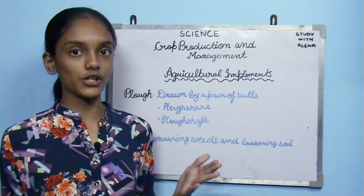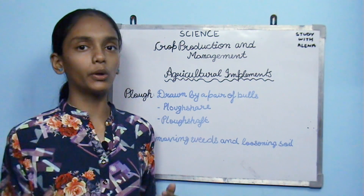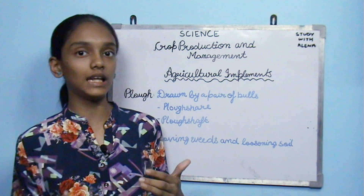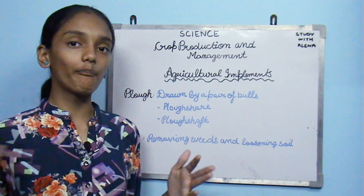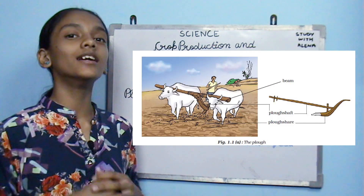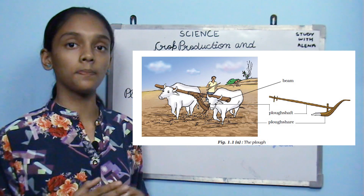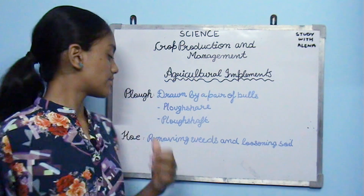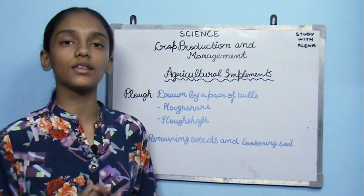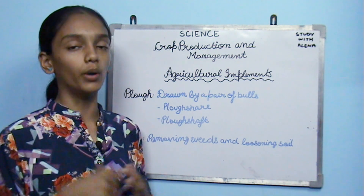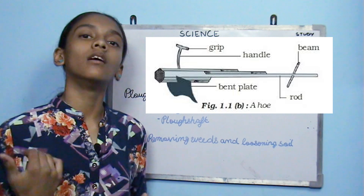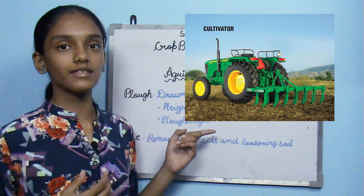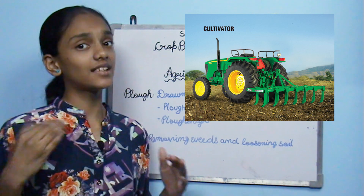Now let's look at agricultural implements — tools used during farming processes like tilling, sowing, and irrigation. The plough is used for tilling and is driven by a pair of bulls. It has a plough shaft made of wood and a triangular iron strip called the plough share. The hoe is used for removing weeds and loosening soil. The cultivator is a modern tool driven by a tractor, which saves time and labor.